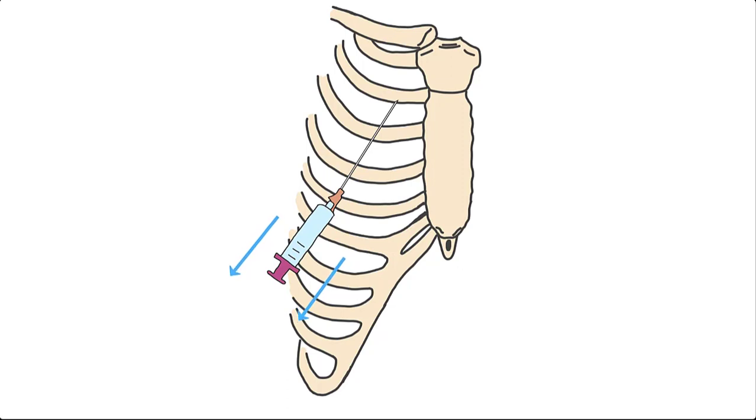Aspiration should continue until resistance is met or 4 liters of air has been removed. Alternatively, the same procedure can be performed at the anterior axillary line at the 4th or 5th intercostal space. This location may be beneficial for patients with a larger body habitus and also is the location of subsequent tube thoracostomy. Needle decompression is a quick response to patients with pneumothorax in unstable condition. However, subsequent definitive decompression must still be achieved.